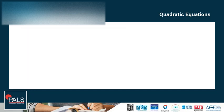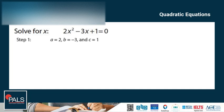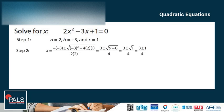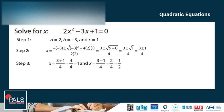Let's apply the steps using an example. Solve for x: 2x squared minus 3x plus 1 is equal to 0. Step 1: a is 2, b is negative 3, and c is 1. Step 2: Plug in the values and simplify. Step 3: Use the plus and minus to show the two final answers. x is equal to (3 plus 1) over 4, which equals 1, and x is equal to (3 minus 1) over 4, which equals 2/4 or 1 half. So the final answers are x is equal to 1 and x is equal to 1 half.